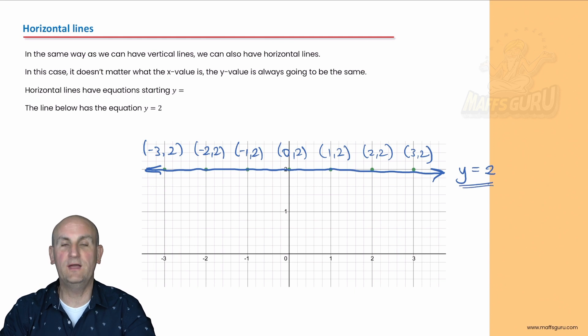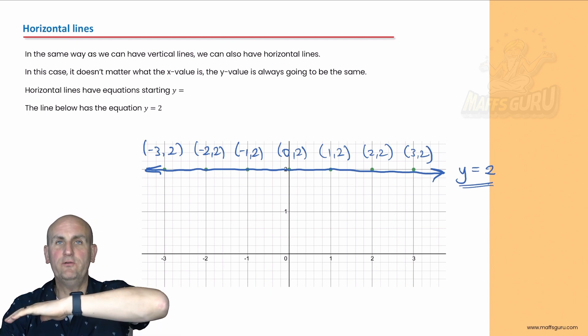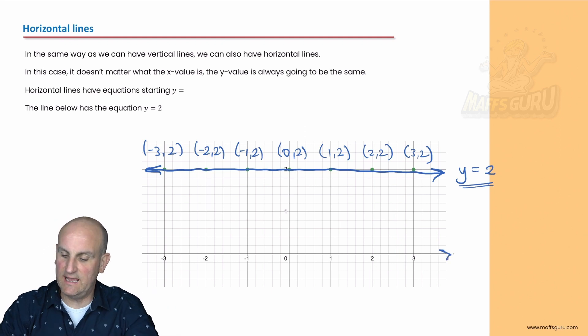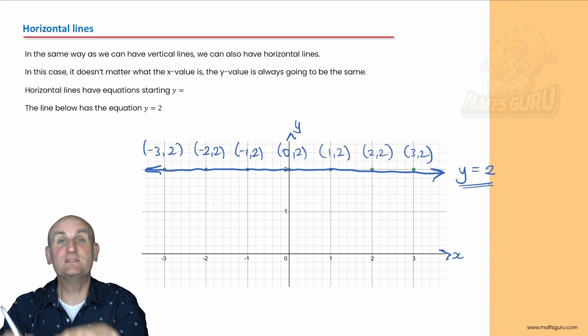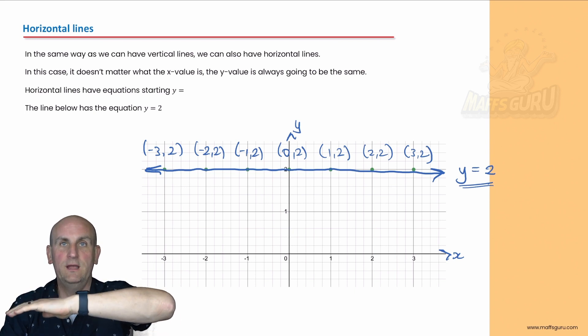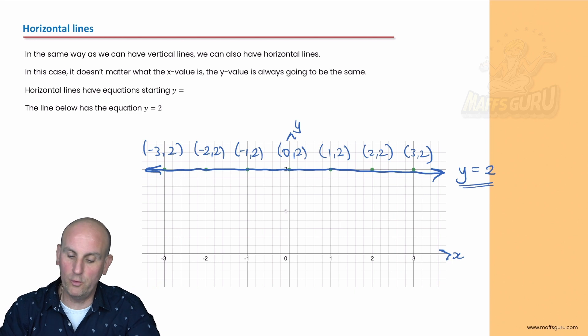Every y value is equal to 2, and there we go, that is my horizontal line. Now can you see where we get tricked with these? We normally expect horizontal lines have an x in it because this is the x-axis and that's always horizontal, and this is the y-axis and they're always vertical, but not for these questions. It's counterintuitive.